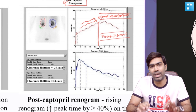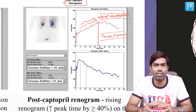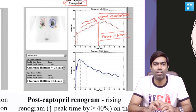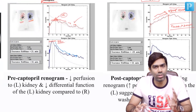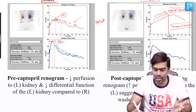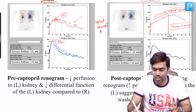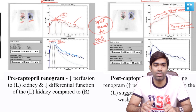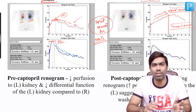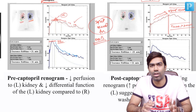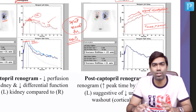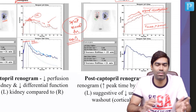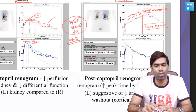A rising renogram is very classic of a vascular lesion of the kidney such as renal artery stenosis, especially when comparing pre- and post-captopril renograms. Importantly, with MAG3, the split renal function generally does not change significantly between pre- and post-captopril images — unlike DTPA imaging, where there is a definite decline in the split renal function of the stenotic kidney after captopril. This distinction between MAG3 and DTPA behavior is very important to understand.